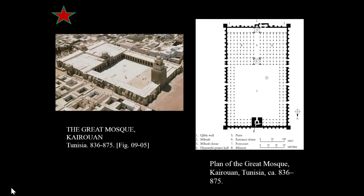They can pray anywhere — they don't have to do it at a mosque — but Friday noon prayer requires gathering together, similar to how Christians gather at a church for Sunday mass. When you think about the construction of this space, you have to think about the layout, what the worshippers are doing, how they're entering the space, and what sort of rituals they're performing. The architects are really thinking about how the space is used by the worshipper.